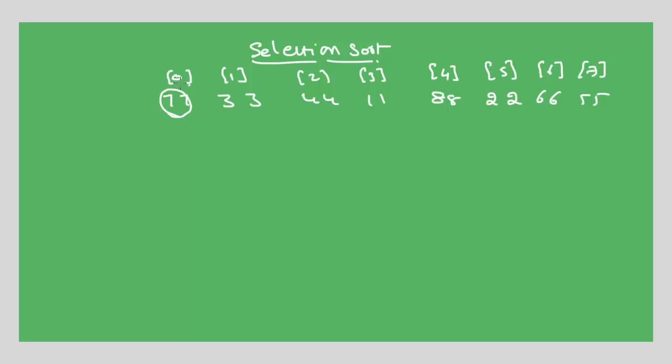Then identify the smallest value among all the list. Here 11 is the smallest value from all the list, totally out of 8 elements. So we identified the starting position value and the smallest value. We need to exchange these two values.